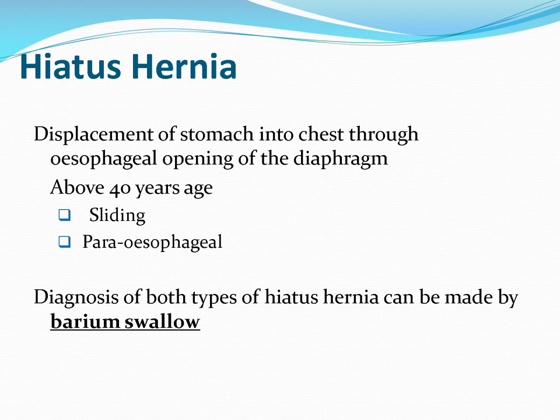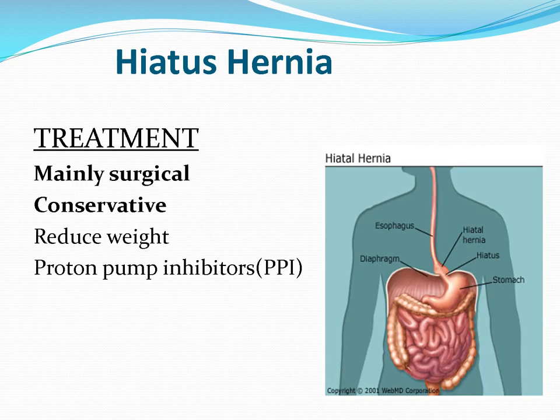Hiatus hernia is the displacement of the stomach into the chest either through the esophageal opening or by the side of the esophageal opening. It can be a sliding hernia (through the same opening) or a paraesophageal hernia (just at the side of the cardiac end). The stomach herniates through the weakest part of the diaphragm into the chest. Diagnosis is made by barium swallow.